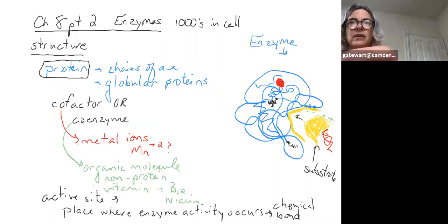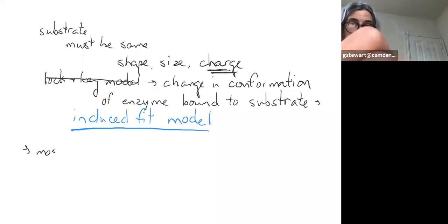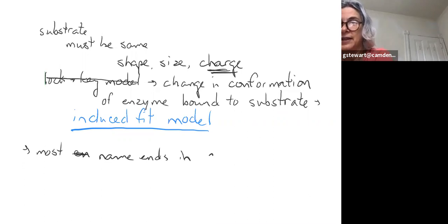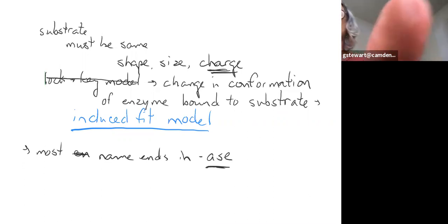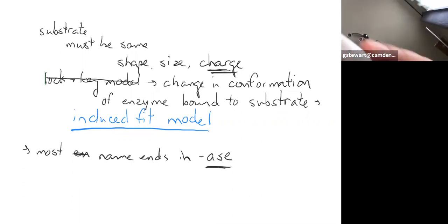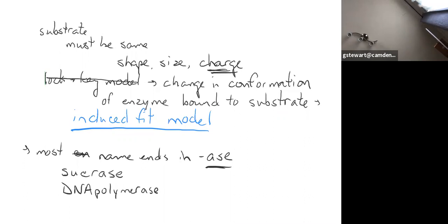Another tidbit about enzymes is that most enzymes have names ending in -ase. So that suffix helps us identify something as an enzyme. For example, sucrase is an enzyme that breaks sucrose — a disaccharide — into its monosaccharides. Another example, though it's a longer word, is DNA polymerase III.